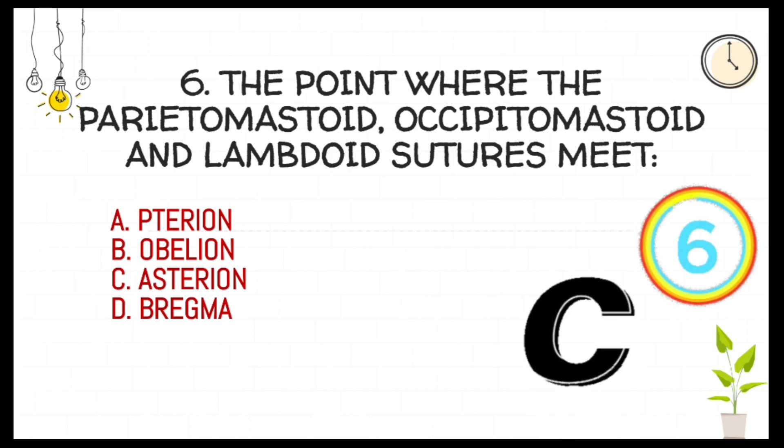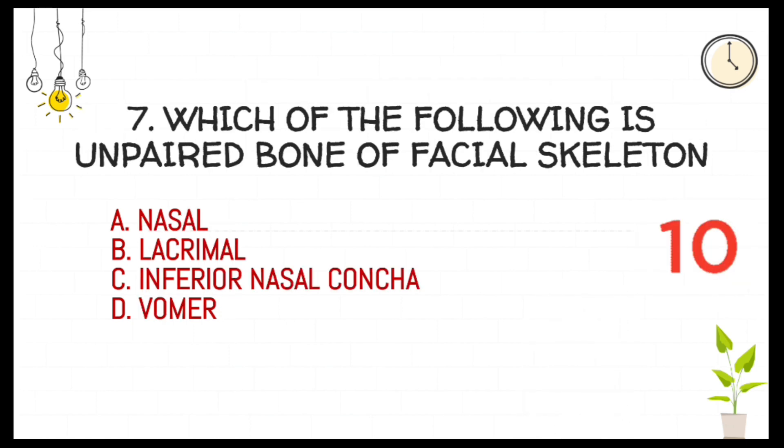C: asterion. Which of the following is an unpaired bone of facial skeleton? A nasal, B lacrimal, C inferior nasal conchae, D vomer.